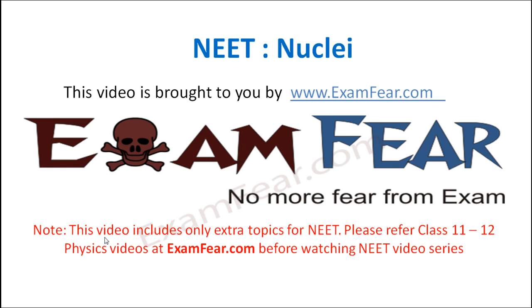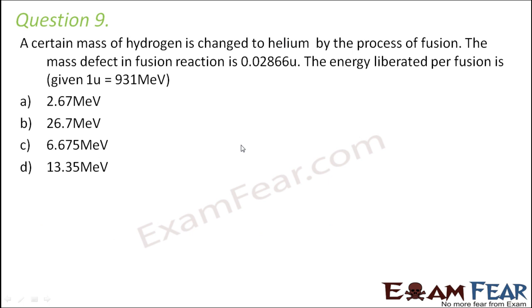Hello friends, this video on NEET Nuclei is brought to you by examfear.com — no more fear from examfear.com. Question number 9: A certain mass of hydrogen is changed to helium by the process of fusion. The mass defect in the fusion reaction is 0.02866U. Find the energy liberated per fusion.